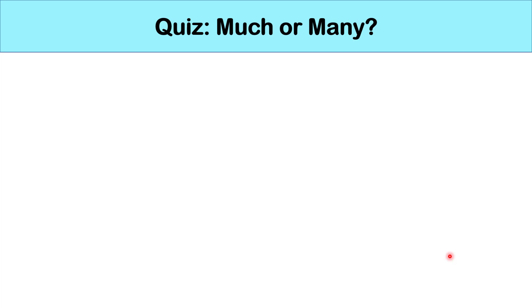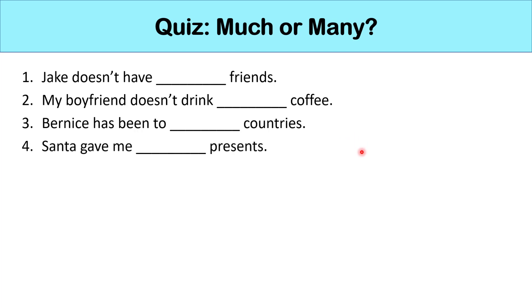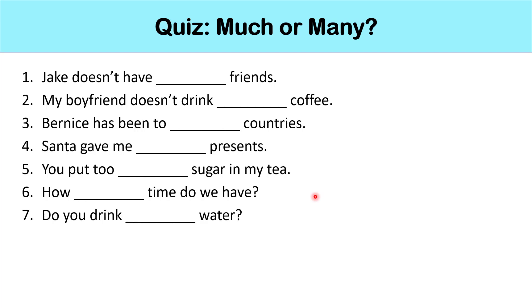So now let's do an eight-question quiz. I'm going to read them all to you first, and then correct them together with you. Number one: Jake doesn't have ___ friends. Number two: my boyfriend doesn't drink ___ coffee. Number three: Bernice has been to ___ countries. Number four: Santa gave me ___ presents. Number five: you put too ___ sugar in my tea. Number six: how ___ time do we have? Number seven: do you drink ___ water? Number eight: does Michael go to ___ parties?